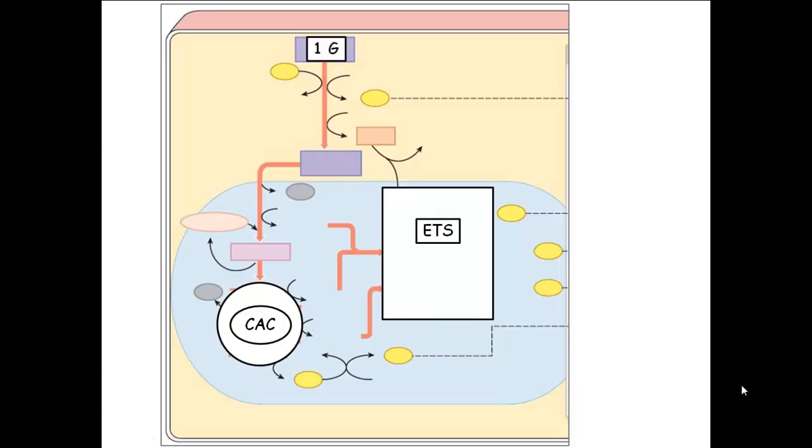One glucose gets converted to how many? Two. Two pyruvates, right? And from this process, which is called what? Glycolysis. You net, the net result of that is what? Two ATP, two NADHs. That happens where? In the cytosol. Do you need oxygen? No.